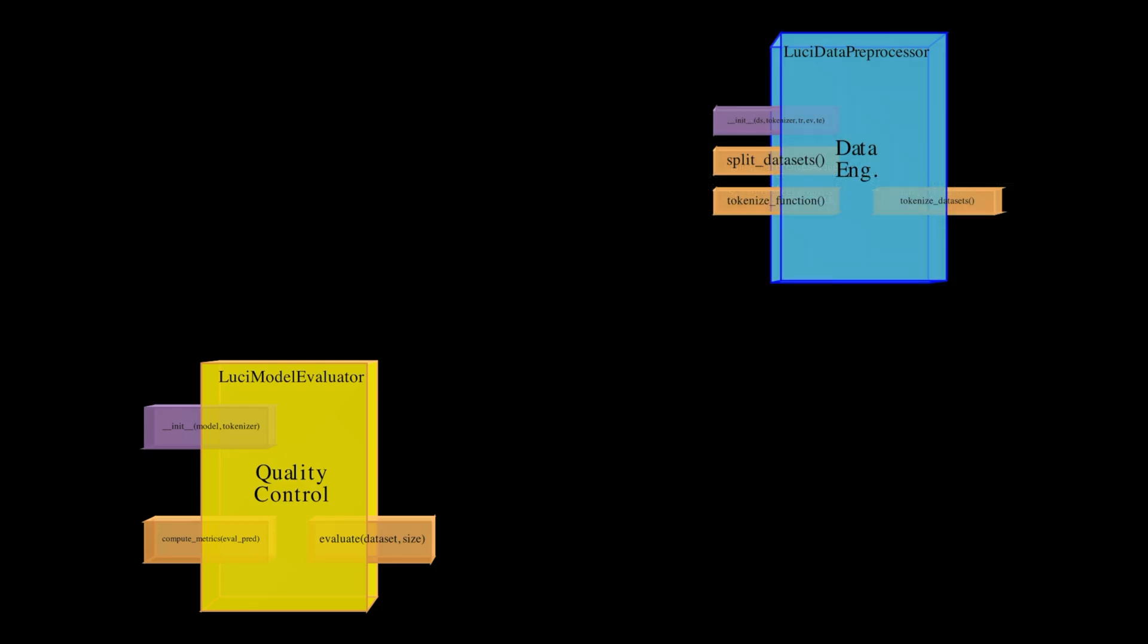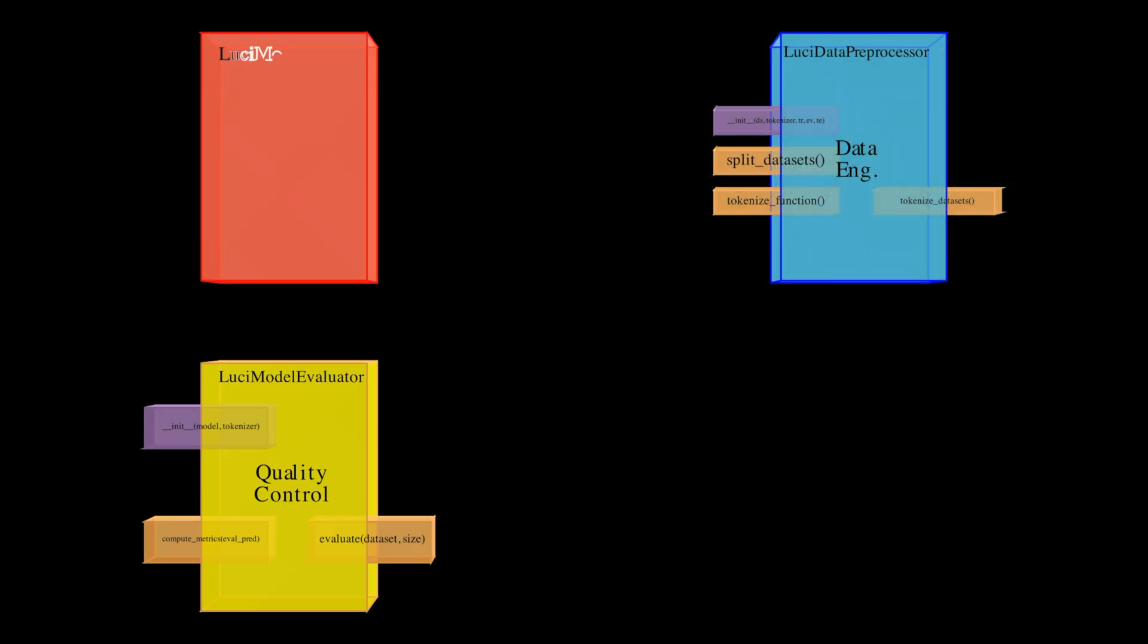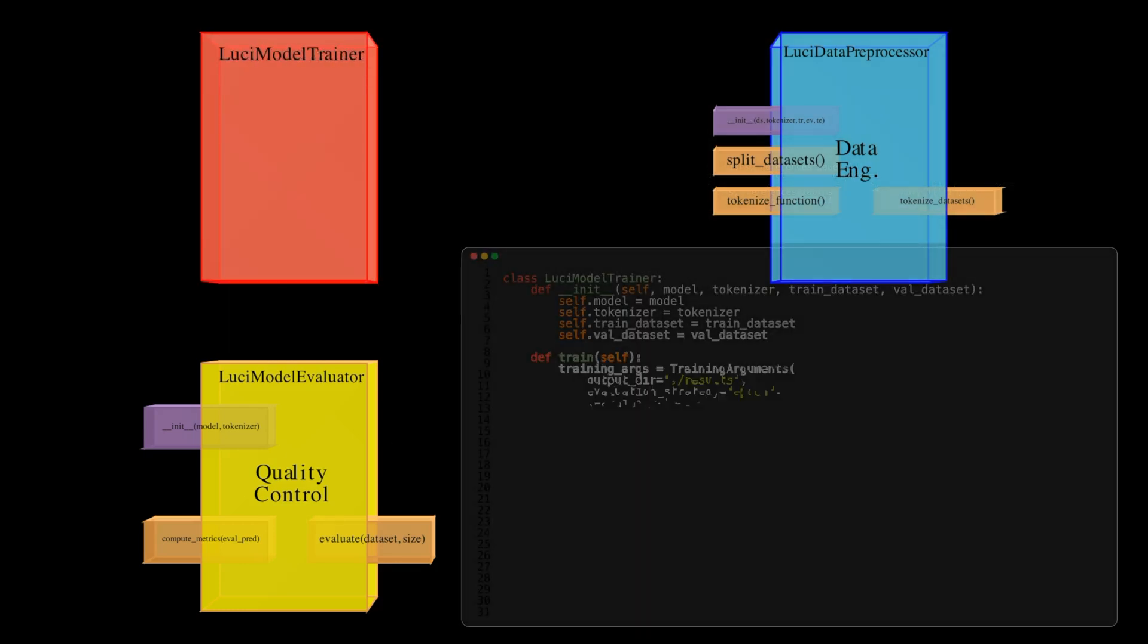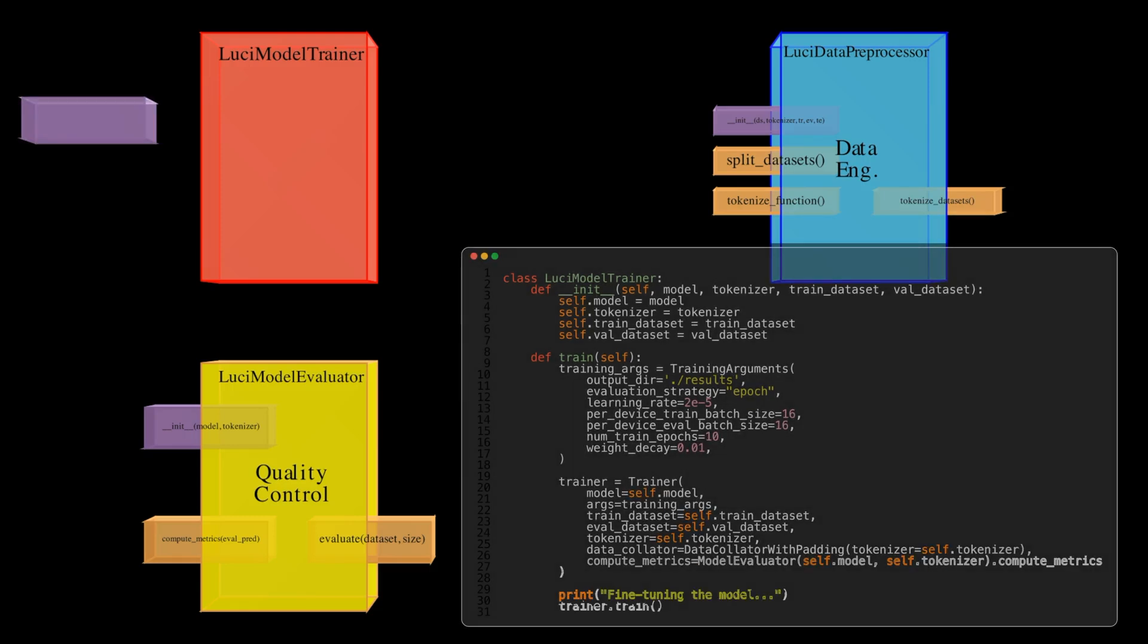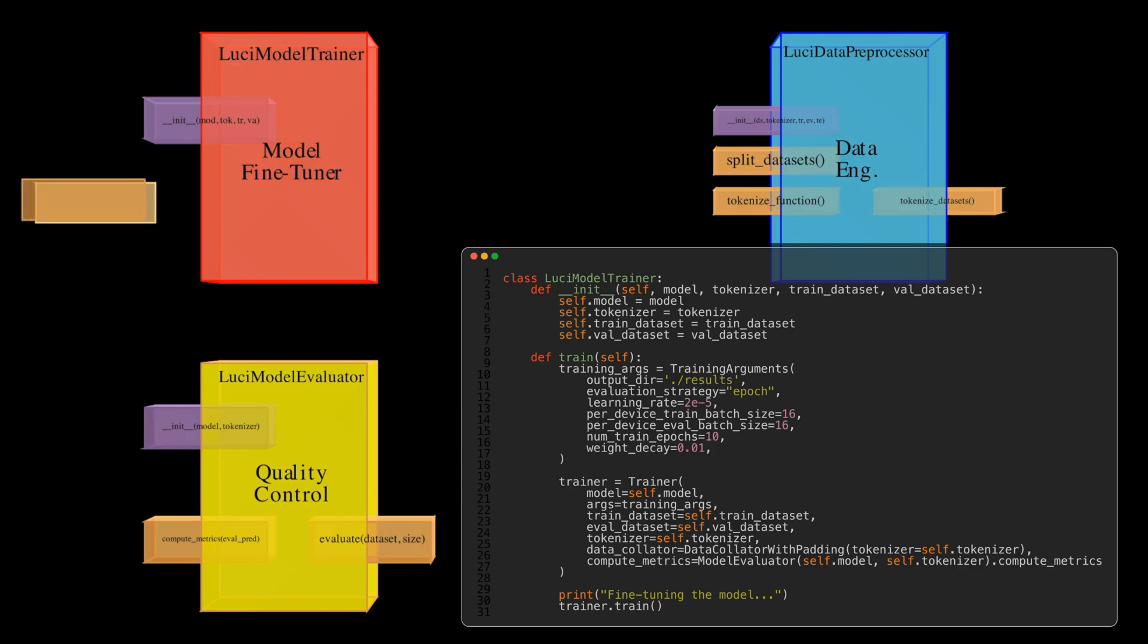Next, we have the Lucy Model Trainer. This is a wrapper around the Hugging Face Trainer class that we looked at earlier on. It takes the model, tokenizer and training data and fine-tunes our model for us.